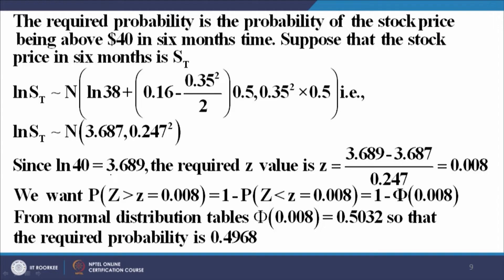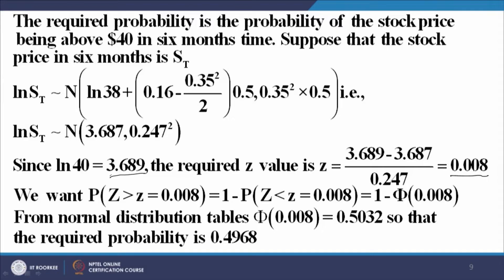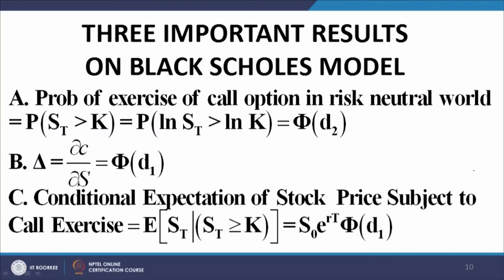We need to find the probability of the stock finishing greater than 40. Log(40) is found to be 3.689. Using this value along with the mean and standard deviation of the distribution, we calculate the z-value, which turns out to be 0.008. Therefore we need the probability that the standard normal variate takes a value greater than 0.008. Using normal distribution tables, the probability is found to be 0.4968. This illustrates the use of the log-normal property of stock prices.